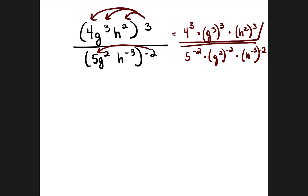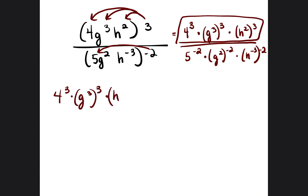Let's start with the top piece. 4 to the third power is 4 times 4 times 4, which is 64. Then g to the third power stays as g to the third power, and h squared to the third power is h to the sixth power because we multiply 2 times 3.